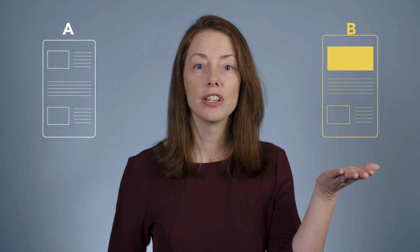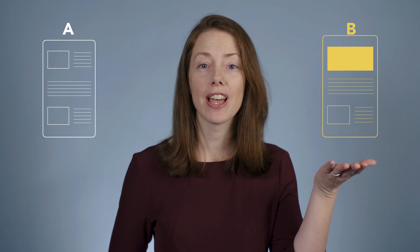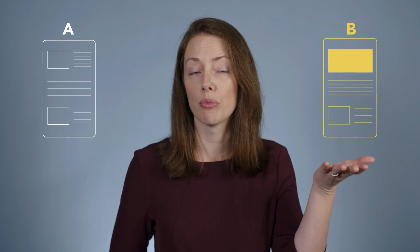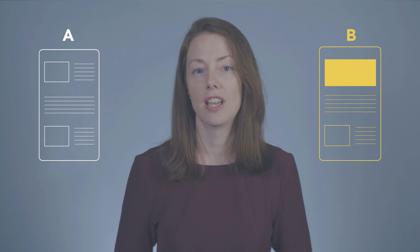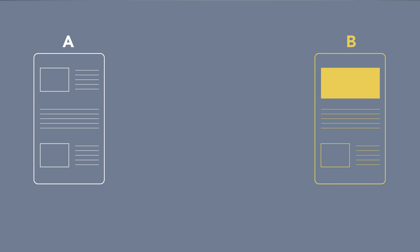The B version is modified with a change that you think will improve the user experience. The test works by randomly assigning real users to see either version A or version B, and then measuring their behavior to find out whether people act differently when they get the B version.